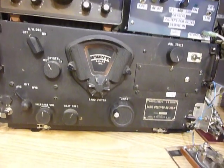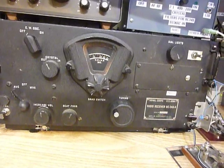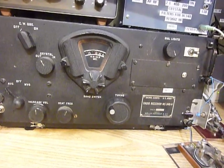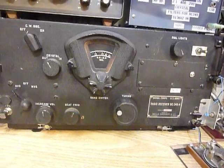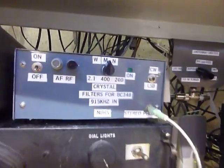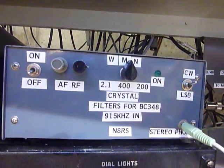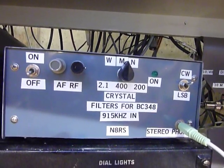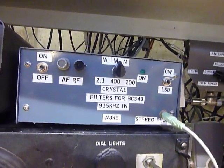Hi, this is Bob. Yesterday I made a video for YouTube on the crystal filter adapter for the BC-348 with three crystal filters in it: 2.1 kilohertz, 400 Hertz, and 200 Hertz. I decided it would be a good idea to show how this works on the air.